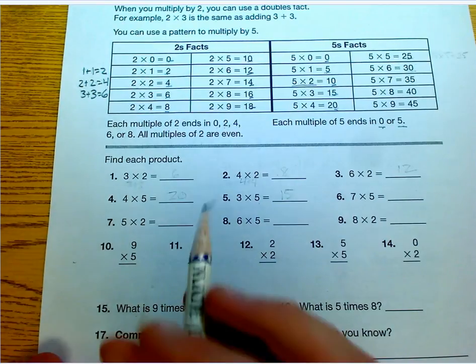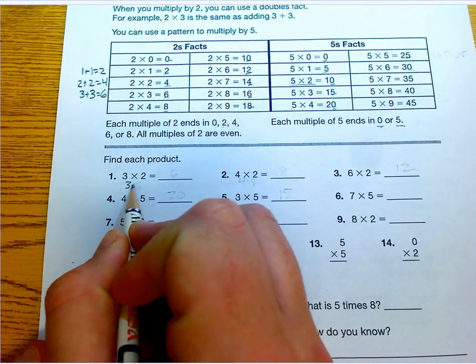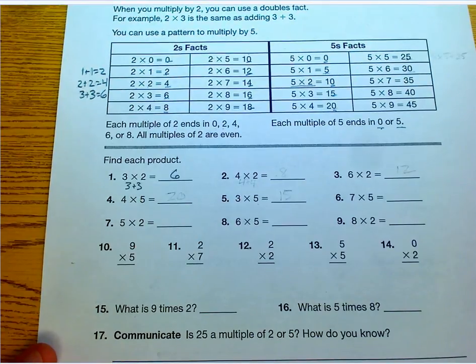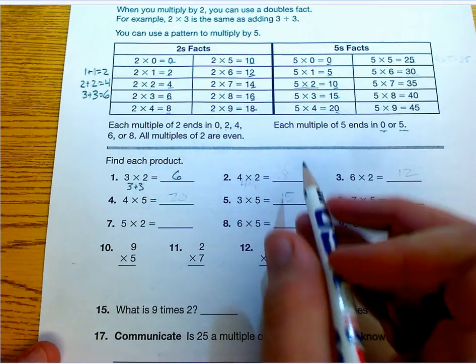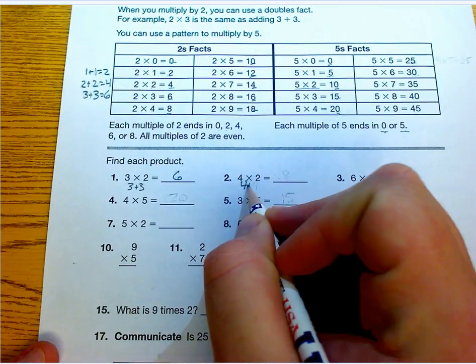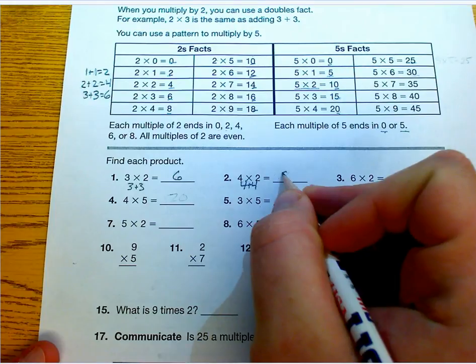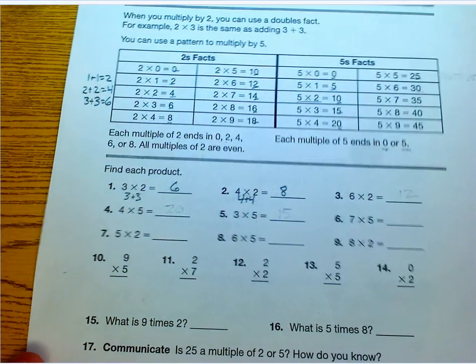I'm going to use repeated addition there. I'm going to say 3 plus 3 and I know that's 6 using that double. Then 4 times 2, I'm going to do the same thing, use repeated addition. 4 plus 4, that's a double. That is 8.